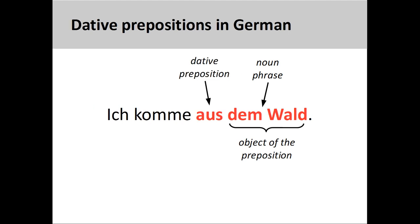Dative prepositional phrases function in the same manner, with the exception that they have a dative object. Here the object of aus, meaning 'out of,' is dem Wald, with the definite article dem indicating the dative case. As with accusative prepositions, there is no reason why these prepositions take a dative object — they simply have to be memorized. Let's take a closer look at these prepositions now.